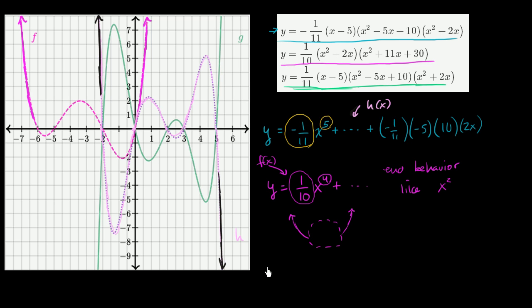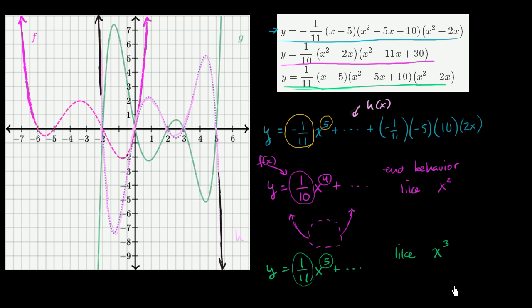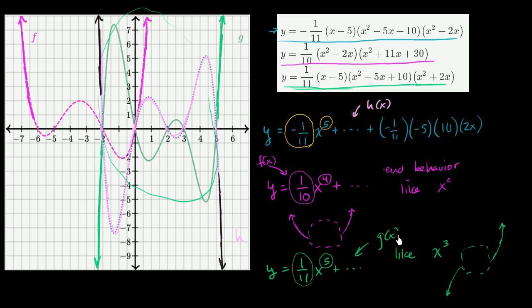Thinking about the highest degree term of the last equation: it would be 1/11 times x times x squared times x squared, so 1/11 x to the fifth, plus all sorts of other business. Here we have an odd degree — fifth degree — and a positive coefficient on that fifth degree term. So it has end behavior like positive x to the third: when x is really negative the function is really negative, and when x is really positive the function is really positive. And g looks exactly like that — as x gets negative the function gets really negative, as x gets really positive it becomes really positive, with craziness in between. So we can feel good that it is g of x.